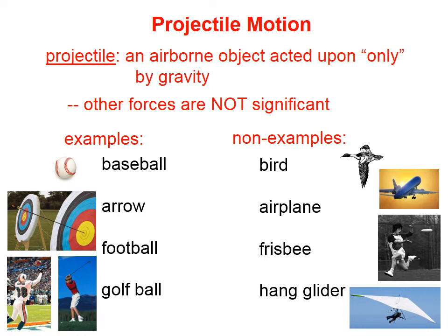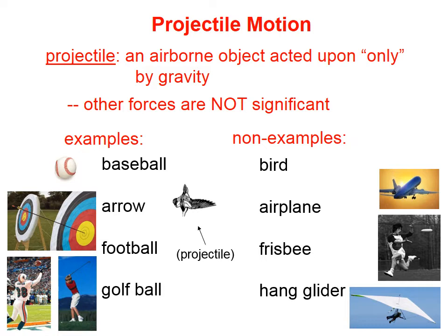Now, we can turn some of these things into projectiles. In fact, this picture with the Frisbee — there actually is a projectile in that picture. And it would be this young man right here. He is a projectile — you can see he's airborne. We could turn this bird into a projectile if we were to shoot its head off; then it would essentially fall as a projectile.